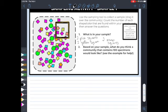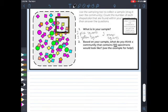Second question, this is where it gets a little bit challenging. The question says, based on your sample, what do you think a community that contains 100 specimens would look like? So here's where we're going to have to do a little bit of math and I left some space below my slide for me to do this.